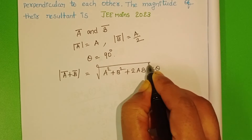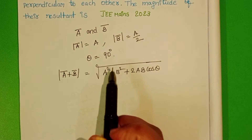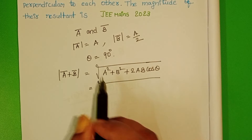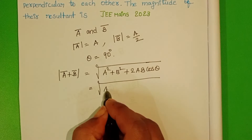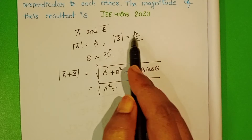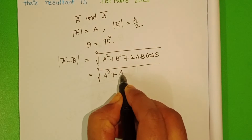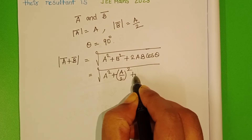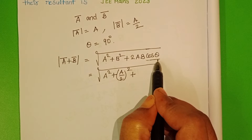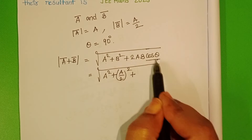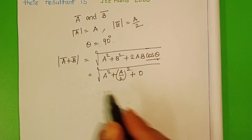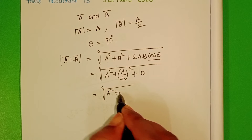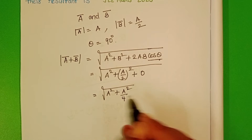This is the formula to find out the resultant of the given two vectors. The magnitude of the first vector is A, so we have A squared, plus the magnitude of the second vector is A/2, so we have (A/2) squared, plus 2AB cos 90 degrees. Since cos 90 degrees equals 0, that term is 0. This gives us the square root of A squared plus A squared by 4.